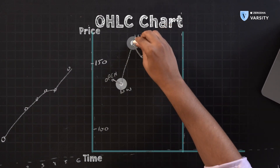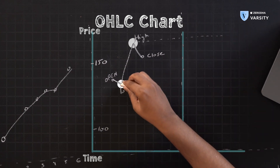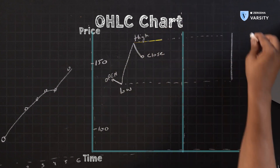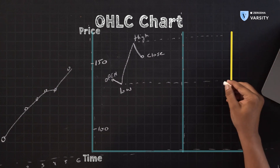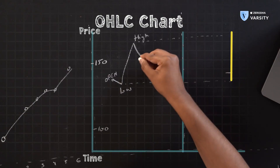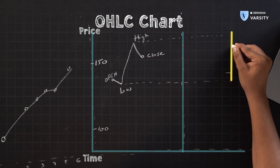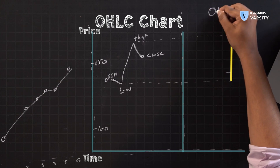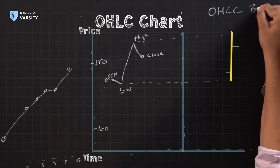The high and low is represented by a vertical line — I'll mark the high and low here with a vertical line representing the high and low of the day. Remember, what we're discussing now is just the data for one single day — a single day's OHLC. We have the high here, the low here, the open is represented by a left horizontal line, and the close is represented by a right horizontal line. This is called an OHLC bar chart, or simply a bar chart.